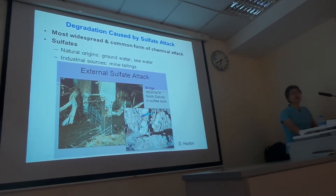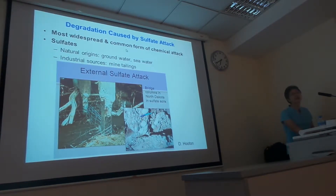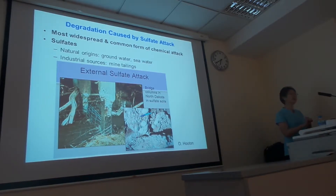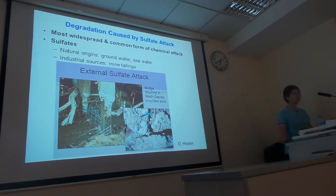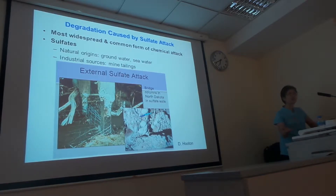Sulfate attack of concrete is one of the most widespread and common forms of chemical attack on concrete. When we talk about sulfate, one source is in natural environments — in groundwater or in soil. The other source is industrial, such as mine tailings where they pile mine waste, and in this kind of situation the groundwater can also have high sulfate content. When concrete is exposed to a high sulfate environment of groundwater or soil, with time the concrete can deteriorate.